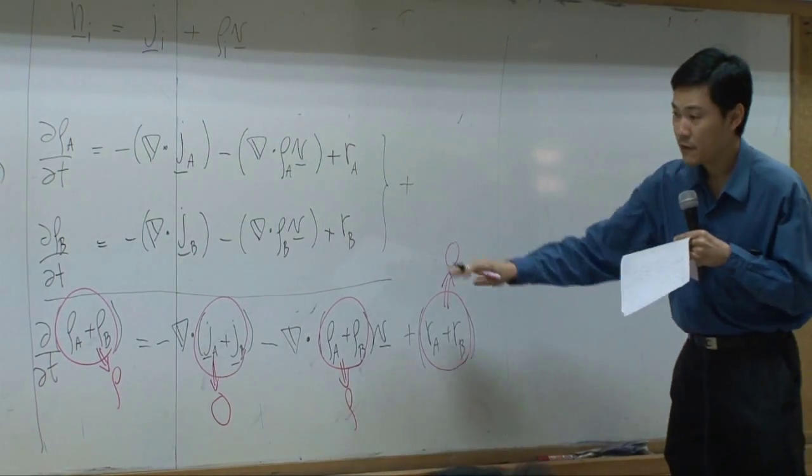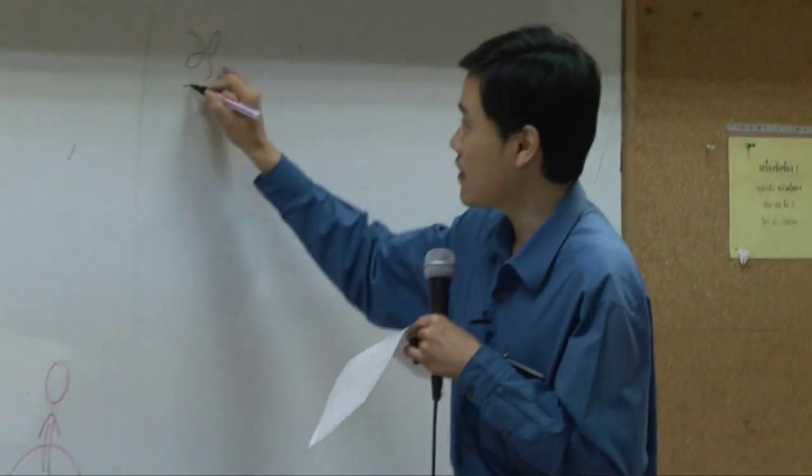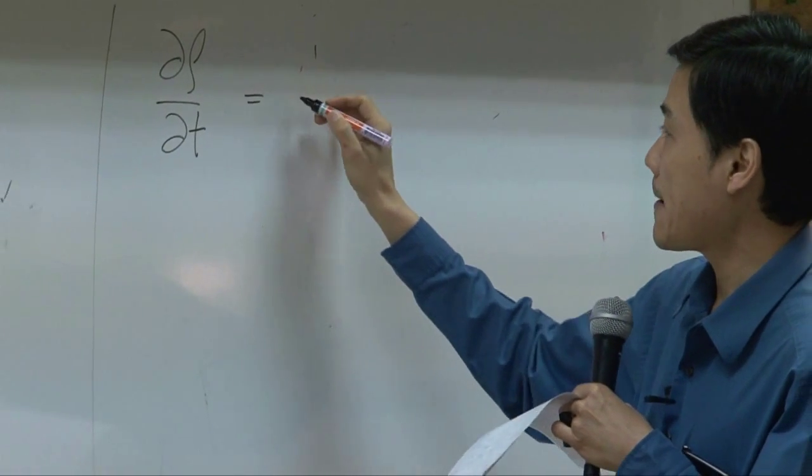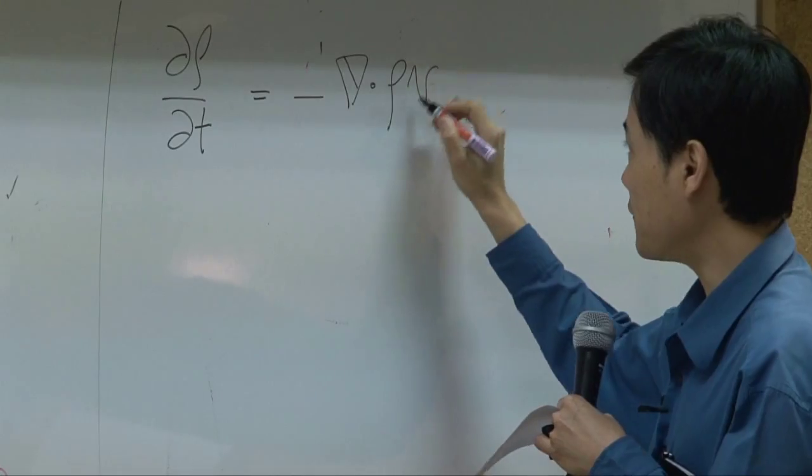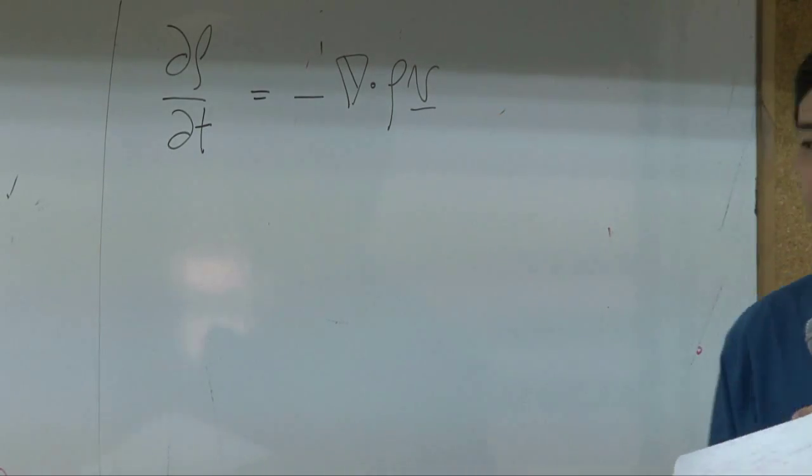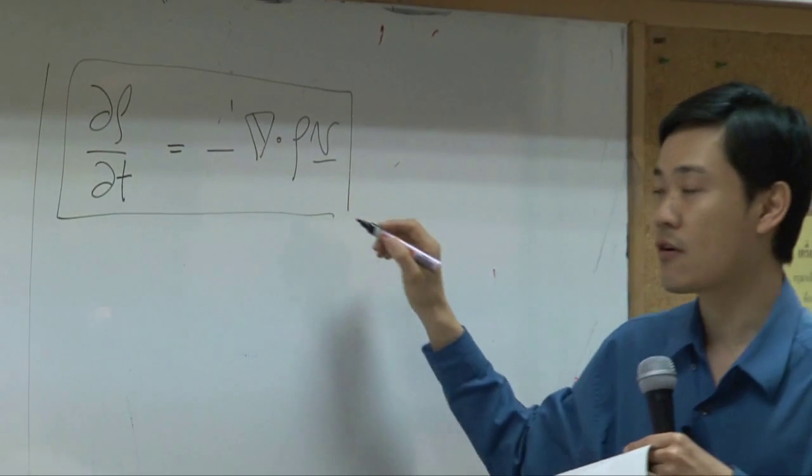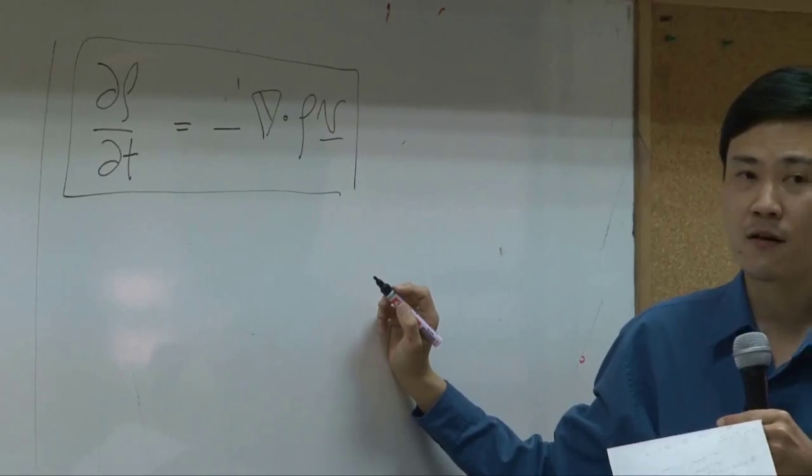So if I write down the equation nicely, I will get dρ/dt equal to minus del dot ρv, right? What is this equation called?